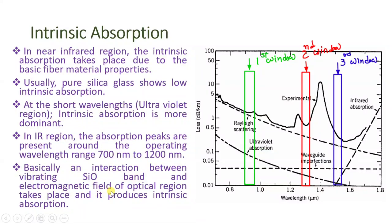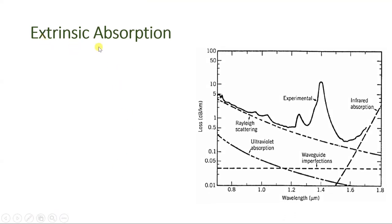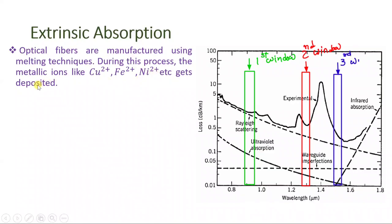Now let us understand extrinsic absorption. As the name indicates, extrinsic absorption happens because of impurities which we add to the fiber material. In fiber material, the basic atomic structure is silica, but other external impurities added with silica result in extrinsic absorption. Optical fibers are manufactured using a melting technique, and during this process metallic ions like Cu²⁺, Fe²⁺, and Ni²⁺ are deposited with silica. These ions absorb the light signal sent inside the fiber and dissipate it as heat, which is extrinsic absorption.